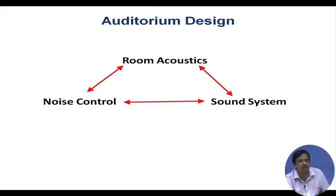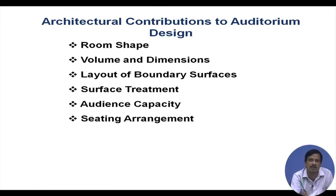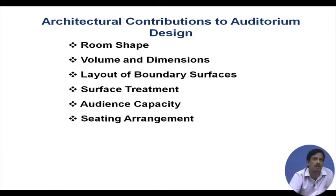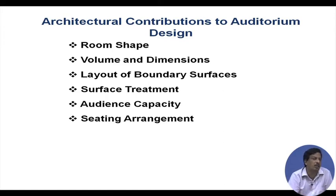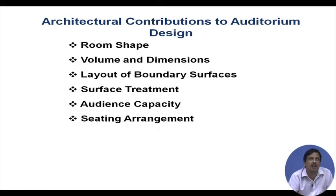We will discuss all these issues and then go for a design example. Architectural contribution to auditorium design: room shape is defined by the architect, volume and dimension are defined by the architect, layout of boundary surfaces, surface treatment, audience capacity, and seating arrangement are all civil design parameters. As an acoustic engineer, you provide acoustical guidelines to the architectural design.